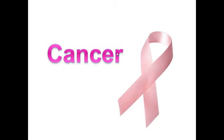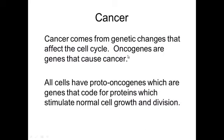Tonight we're going to talk about cancer and the causes of cancer. Many cancers come from genetic changes that affect the cell cycle. In your cells, you have genes called oncogenes — these genes cause cancer. Everybody in their DNA has proto-oncogenes, which are genes that code for proteins that stimulate normal cell growth and division. If you get a mutation in a proto-oncogene, it becomes an oncogene and causes that cell to become cancerous.